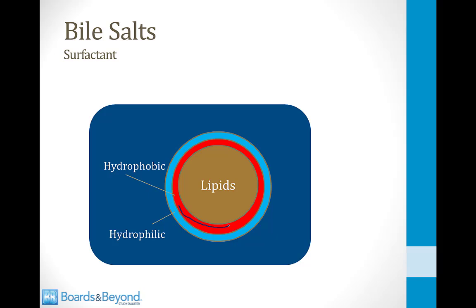Each bile salt has a hydrophobic portion which likes lipids — that moves toward the inside, shown in red here. Each bile salt also has a hydrophilic portion of the molecule which likes water, shown in blue here. So bile salts work as a bridge: part of the molecule binds to the lipids, part dissolves in water, and therefore you can suspend lipids into droplets to give more surface area for pancreatic lipase. Substances that suspend lipids like this are called surfactants, and you may know that soap is also a surfactant.